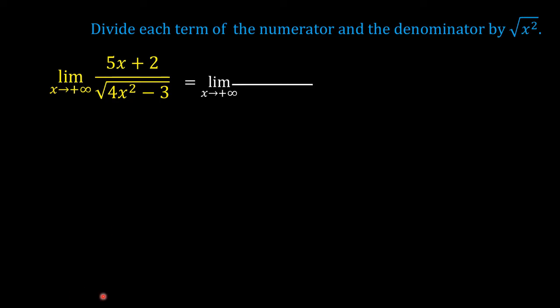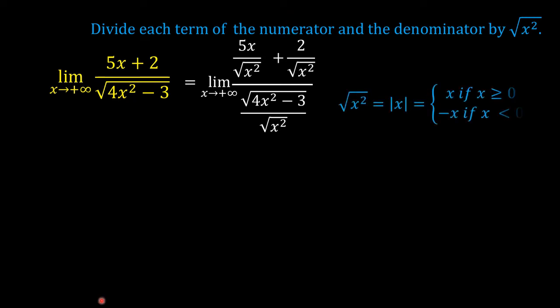We have now the limit of 5x over the square root of x squared plus 2 over the square root of x squared, divided by the square root of 4x squared minus 3 over the square root of x squared, as x approaches positive infinity. In algebra, we learned that the square root of x squared is equal to the absolute value of x, and the absolute value of x is equal to positive x if x is greater than or equal to 0.